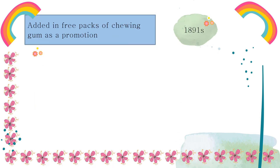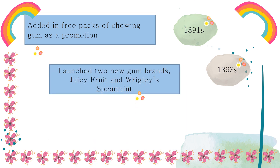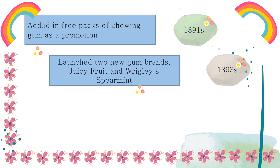After moving to Chicago in 1891, Wrigley began offering store owners incentives to stock his products, such as free cans of baking powder with every order. When the baking powder proved a bigger hit than the soap, Wrigley sold that instead and added free packs of chewing gum as a promotion. In 1893, he launched two new gum brands: Juicy Fruit and Wrigley Spearmint.